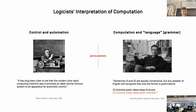Because of its links to the Hilbert program, the meaning of computation — how people thought about what it is — remained colored by the stories of the logicists. I identified two dominant streams evolving from this tradition. The first was about control and automation, with Wiener's cybernetics as its most prominent representative: 'The modern ultra-rapid computing machine was in principle an ideal central nervous system to an apparatus for automatic control.'